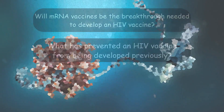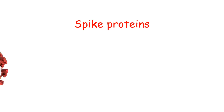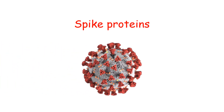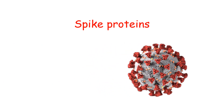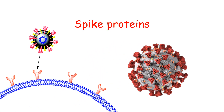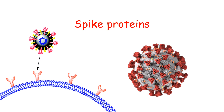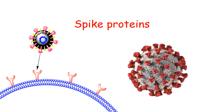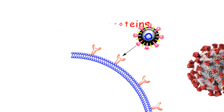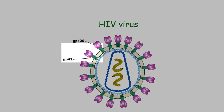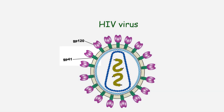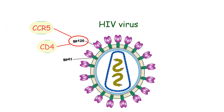Spike proteins are proteins found on viruses that appear often as spikes protruding from the virus. Spike proteins are the proteins the virus uses to enter cells. The spike proteins found on HIV originate as one protein, gp160, but are modified into two proteins: gp120 and gp41. These proteins are expressed on the outside of the envelope surrounding HIV.